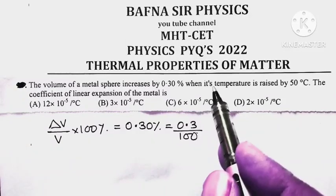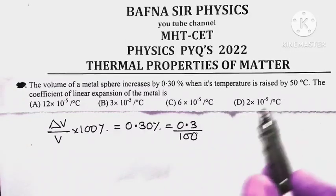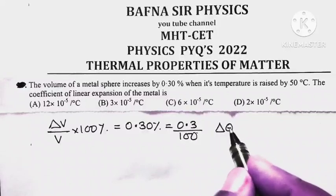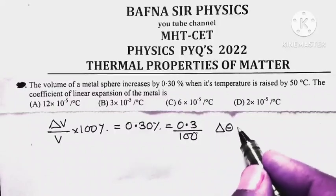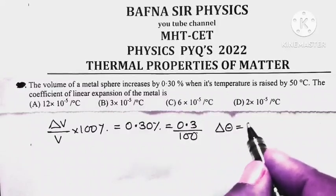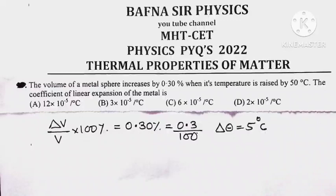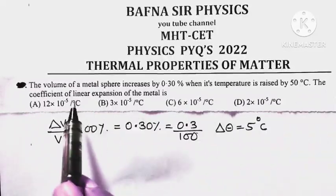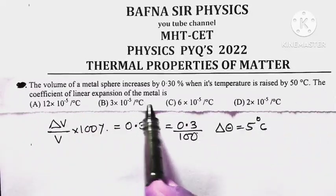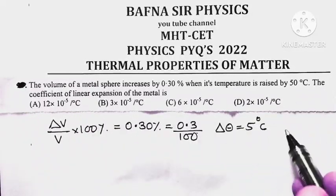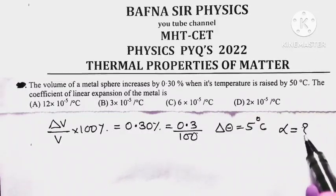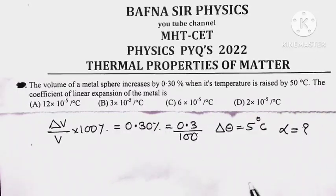Temperature is raised by 50 degrees Celsius means the change in temperature, delta theta, is equal to 50 degrees Celsius. Now, the coefficient of linear expansion of the metal — which we denote by alpha — is what we have to calculate.